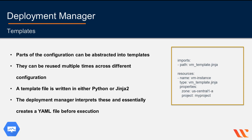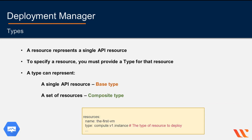Each template will eventually result in YAML syntax. Here you can see the unexpanded configuration file where Jinja templates are used. The resource represents a single API resource — this can be an API resource provided by Google-managed base types or an API resource provided by a type provider. To specify a resource, you must provide a type for that resource. A type can represent a single API resource such as a base type, or a set of resources known as a composite type.